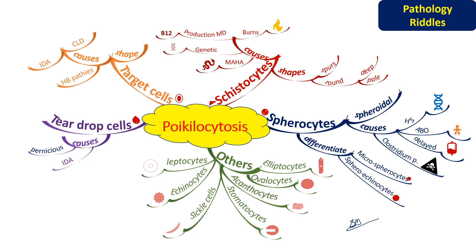Ovalocytes are oval in shape and are seen in megaloblastic anemia. They may also be seen in myelofibrosis or myelodysplastic syndrome. Acanthocytes are RBCs with a small number of spicules of different length, thickness, and shape on their surface. They are seen in conditions like abnormal phospholipid metabolism, inherited RBC membrane protein abnormalities, and in splenectomy patients.